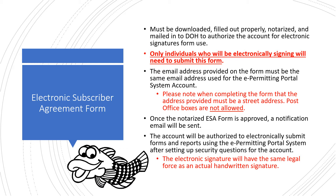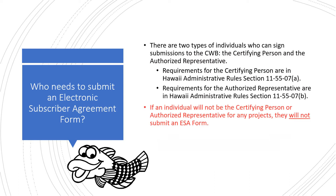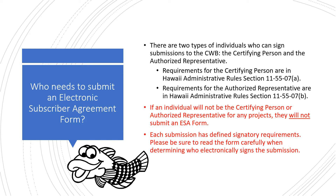The electronic signature will have the same legal force as an actual handwritten signature. There are two types of individuals who can sign submissions to the CWB: the certifying person and the authorized representative.